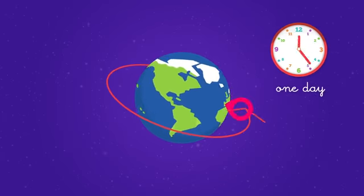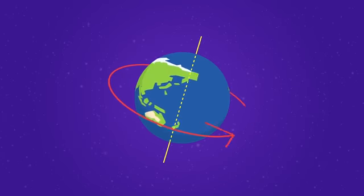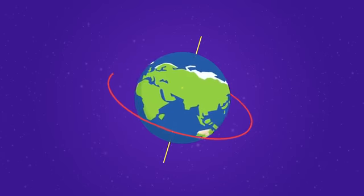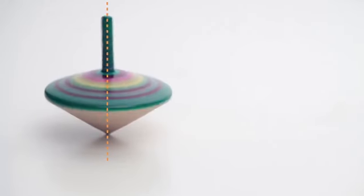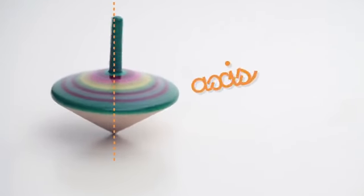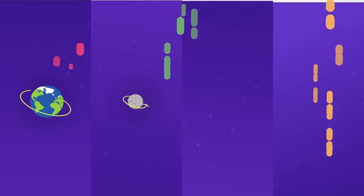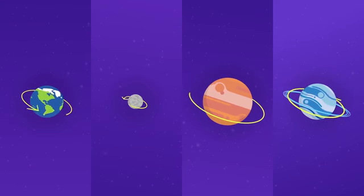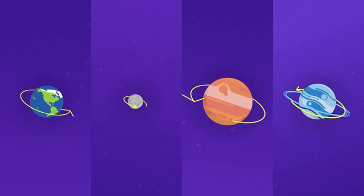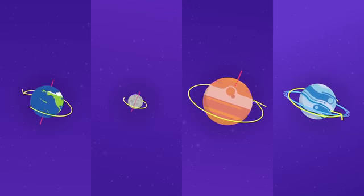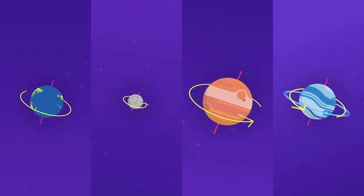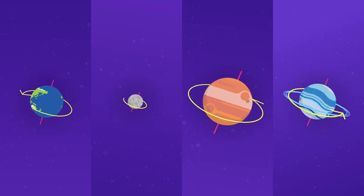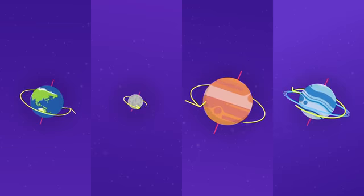An axis is an invisible line around which an object rotates or spins, and rotation is when a planet or moon turns all the way around or spins on its axis once.